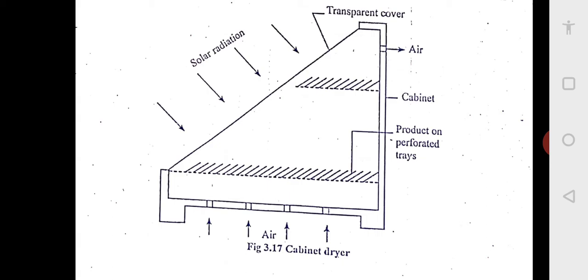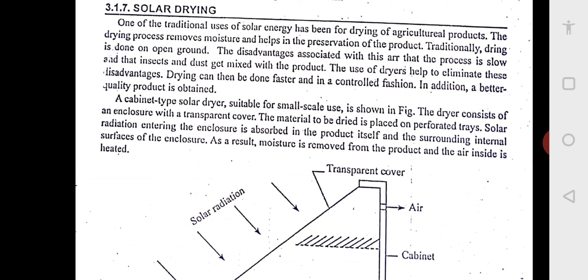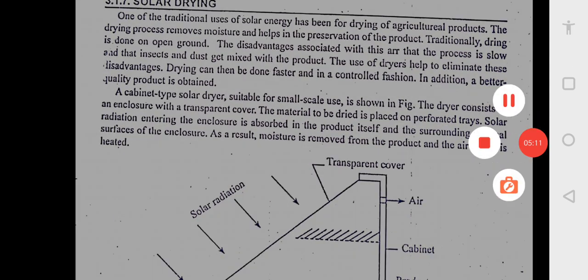It is a very simple device with a transparent, inclined transparent cover, and vents in the bottom for air to enter, and vent at the top for air to escape. It is made of a cabinet and some perforated trays on which we can keep the agricultural produce. This is known as solar drying.